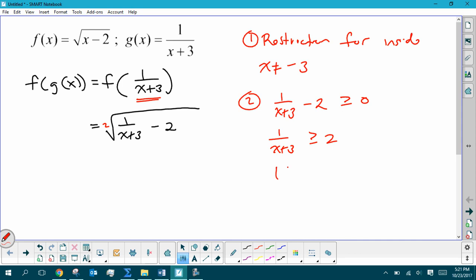So I get 1 is greater than or equal to, what ends up being after I distribute, 2x plus 6. Subtract 6. So you get negative 5. 2x over here. So x ends up being less than or equal to negative 5 halves.